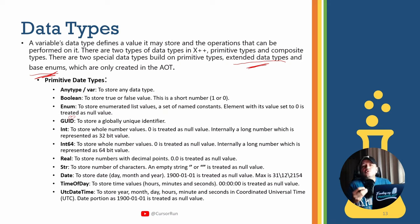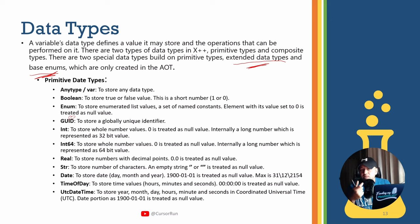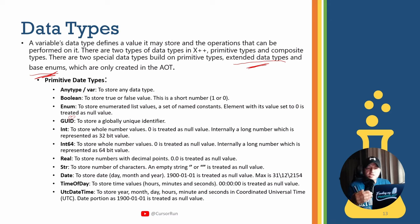You can also define user-defined data types - extended data types. For example, in Dynamics 365 you may want to define a string variable called name in many places - a vendor name, sales order name, customer name, employee name. The first name, last name - those data types are going to have the same labels, string size, and properties throughout the system. So instead of using a plain string in your table definition, you use extended data types or user-defined data types.